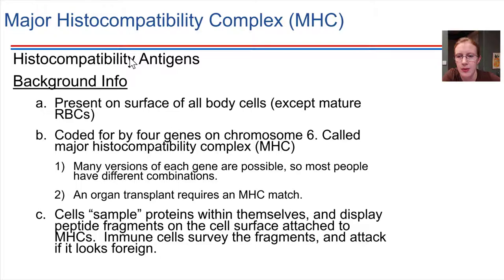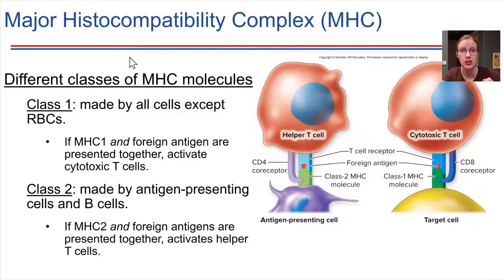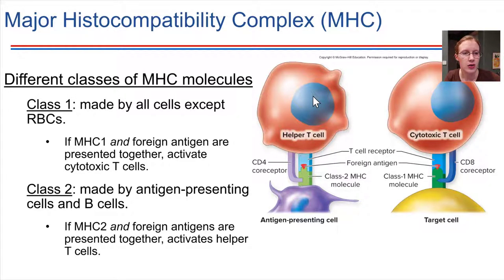There are different classes of MHCs. Class 1 MHCs are made by all cells except red blood cells. Class 2 MHCs are made specifically by antigen-presenting cells like macrophages and dendritic cells. If a Class 2 MHC is present on the cell surface and is also displaying foreign antigens, that is what can activate a helper T cell. The helper T cell then sends a signal — an interleukin or cytokine — to help activate cytotoxic T cells and other immune cells as well.